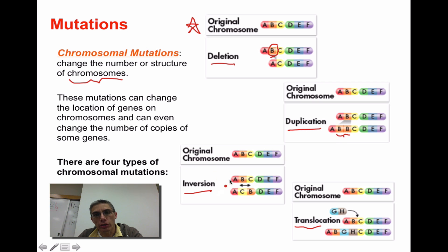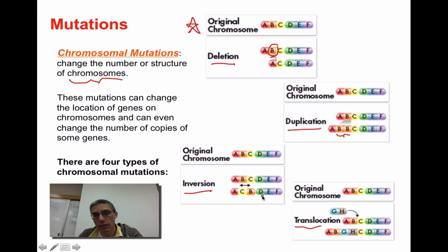An inversion is when you take the original B and C in that order, but switch them around. So instead of being A, B, C, D, E, F, now it's A, C, B, D, E, F. That can be just as bad — you can have some pretty significant problems there as well.